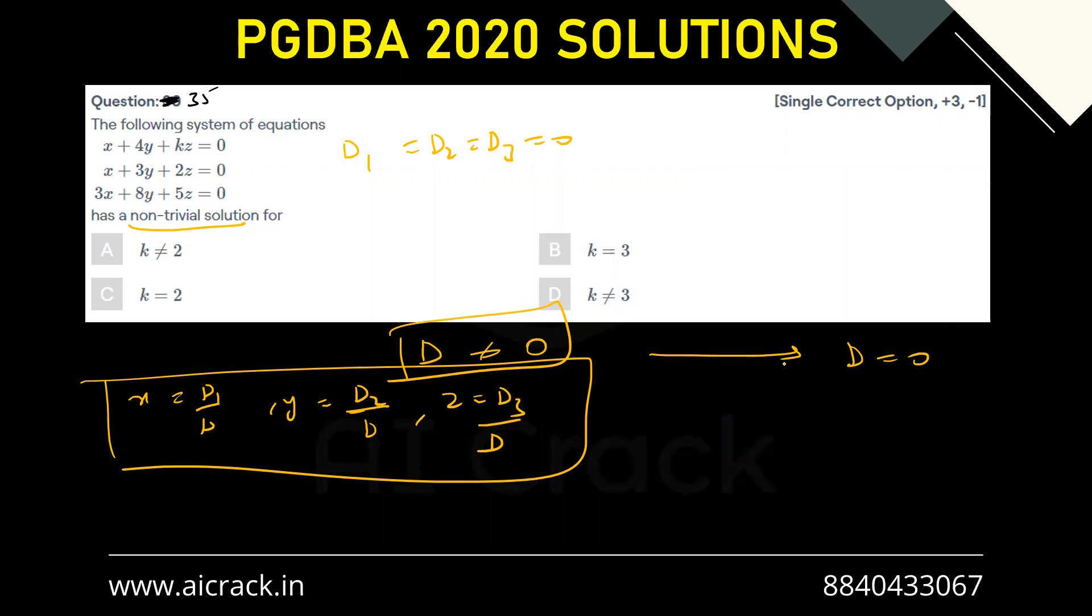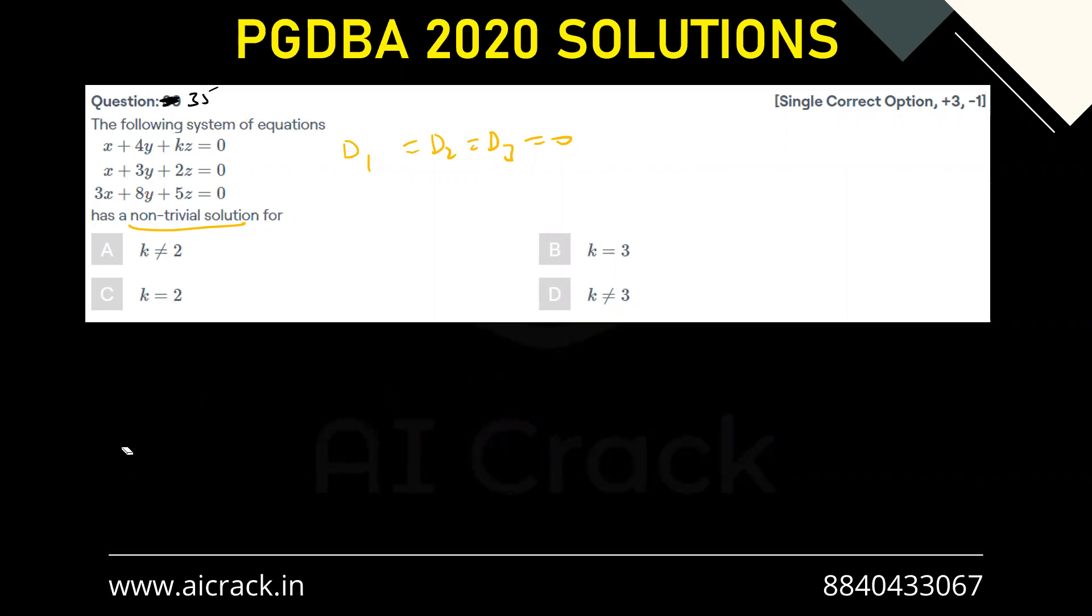So for non-trivial solutions, we would be using d equals to 0. Basically this non-trivial solution means we have to apply d equals to 0. So if we apply d equals to 0 over here,